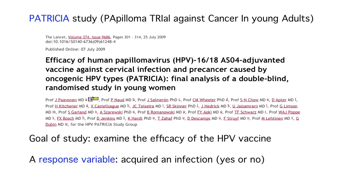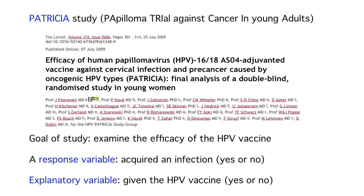Response variables can be categorical or quantitative. In this situation, we have a categorical response variable with two categories: yes, the subject acquired an infection in the study period, or no, they did not. The explanatory variable is also categorical — we believe that getting the vaccine affects the chance of getting an infection, and the explanatory variable is vaccination status, with possible values yes or no.